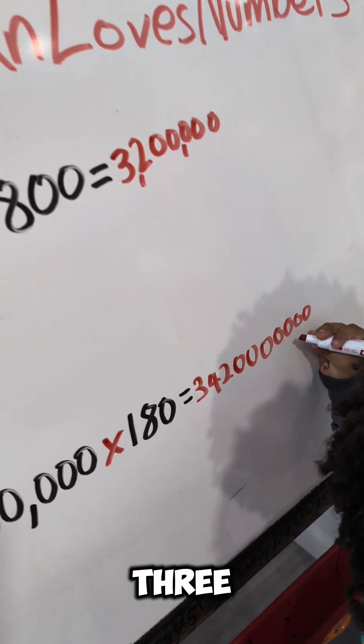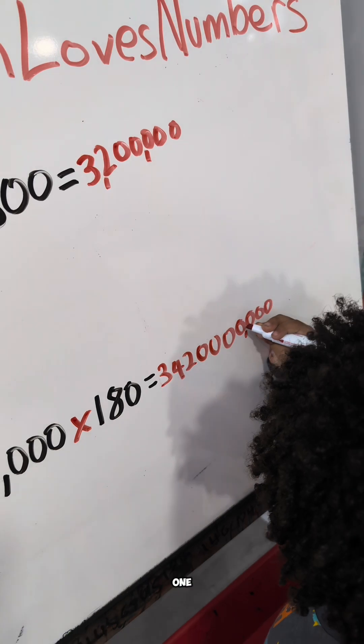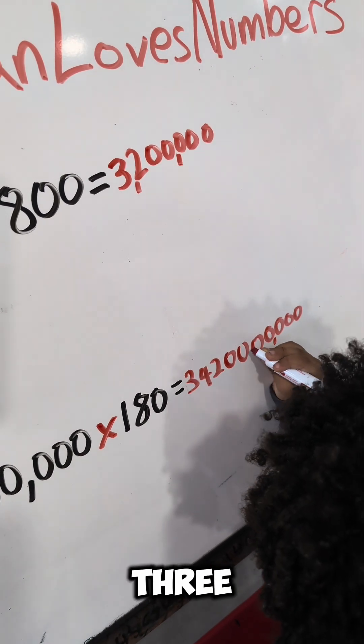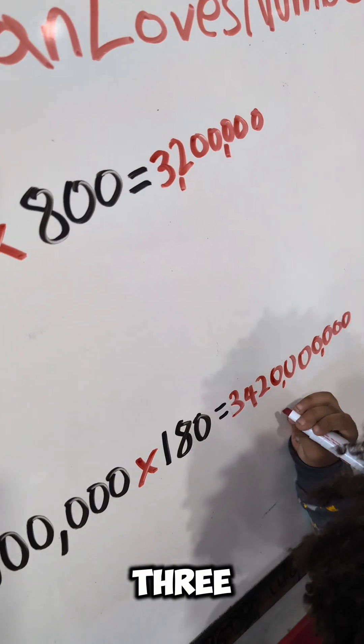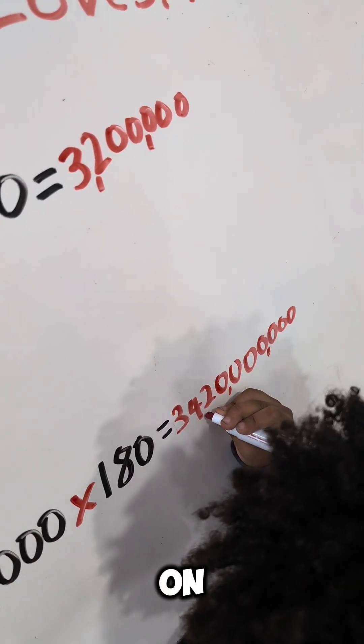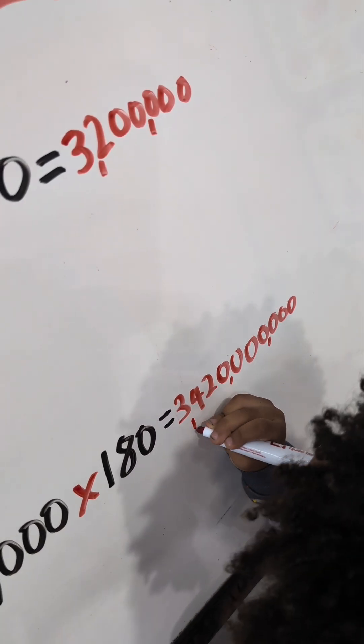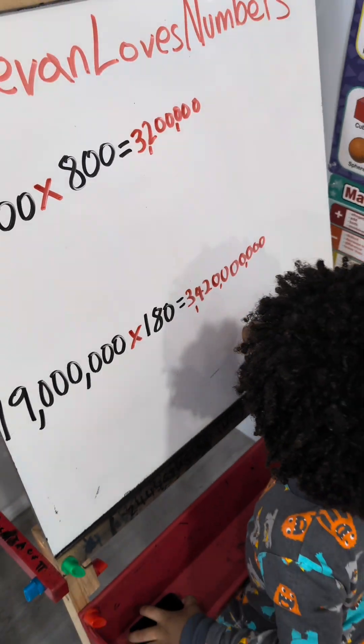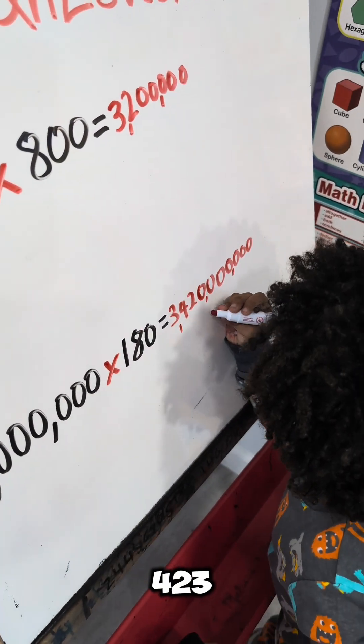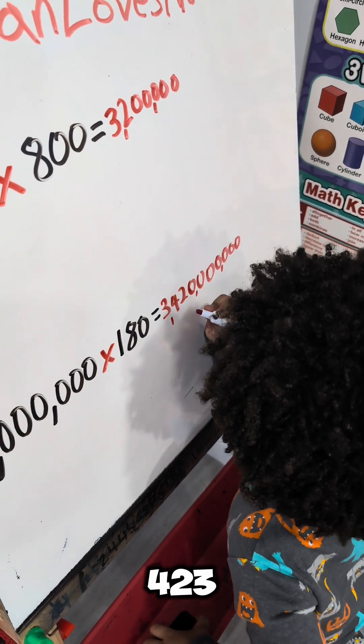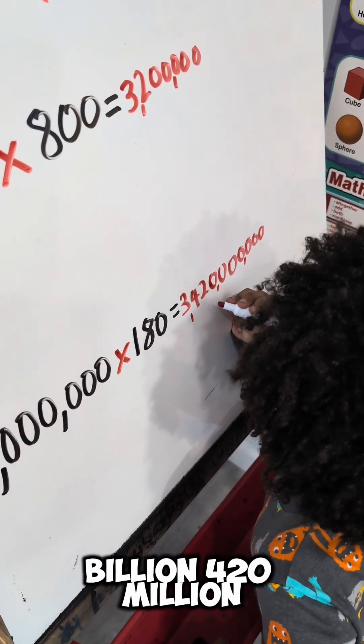One, two, three, comma, one, two, three, comma, one, two, three, comma. Three million, four, three, three million, four, three million.